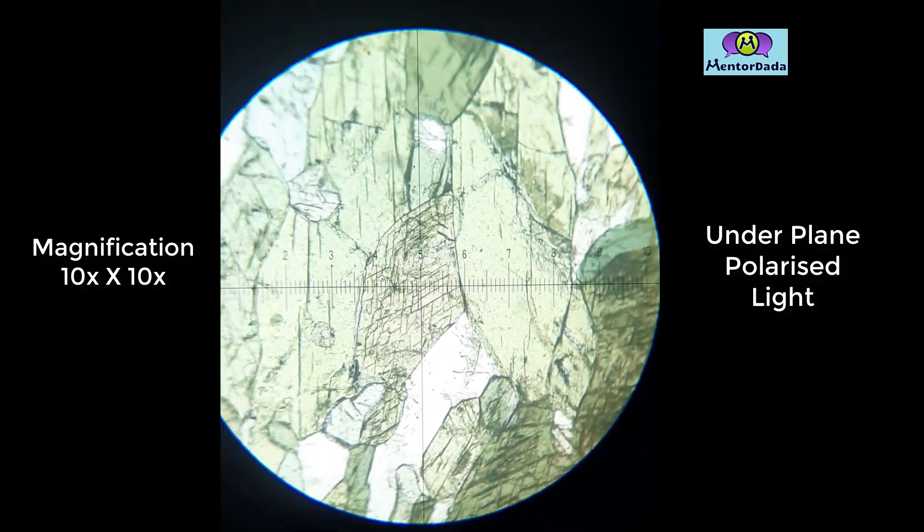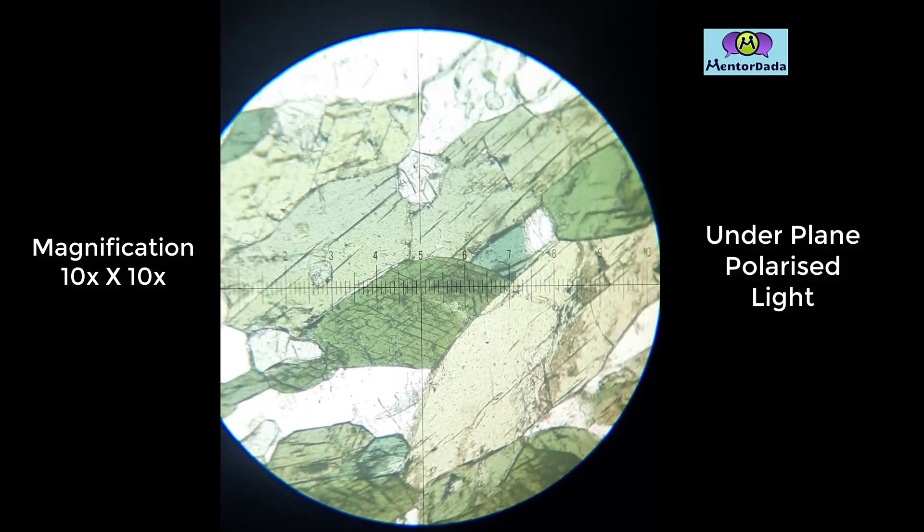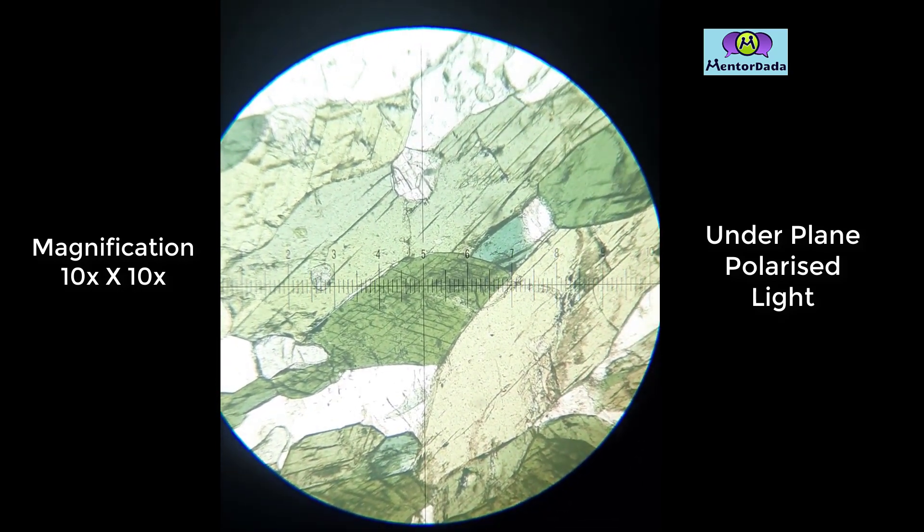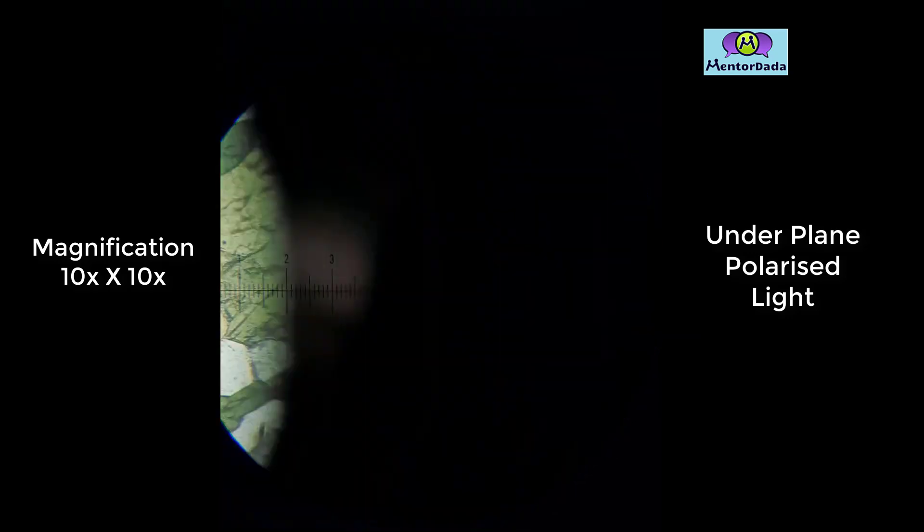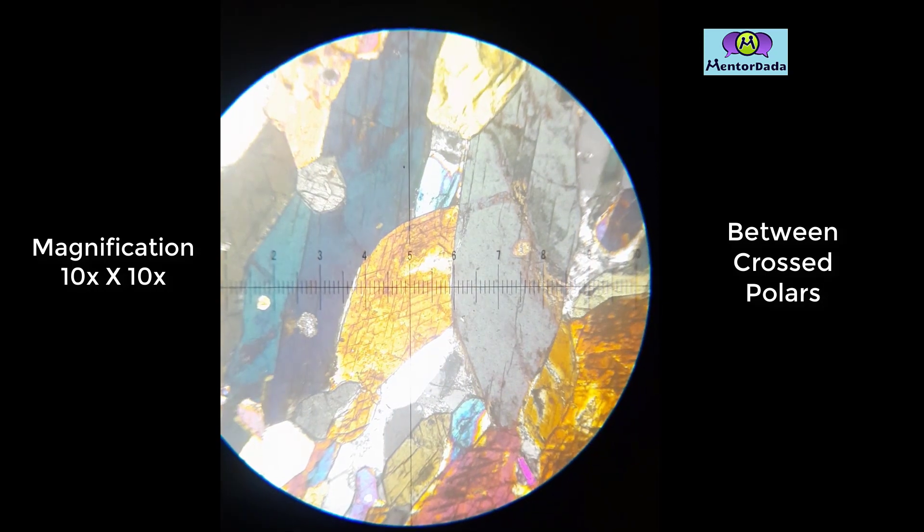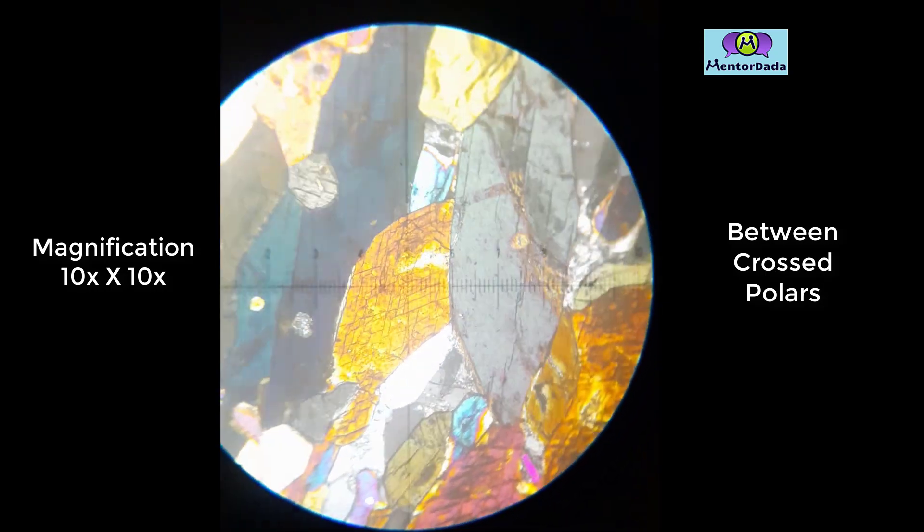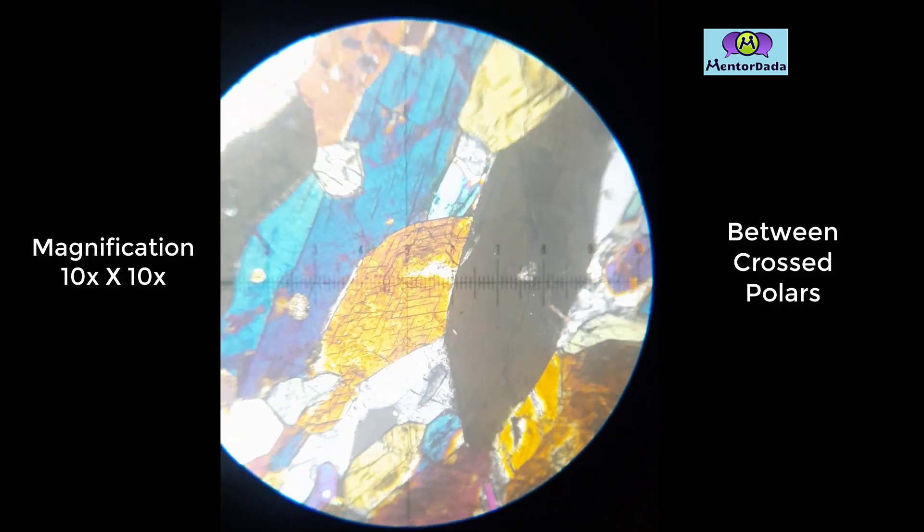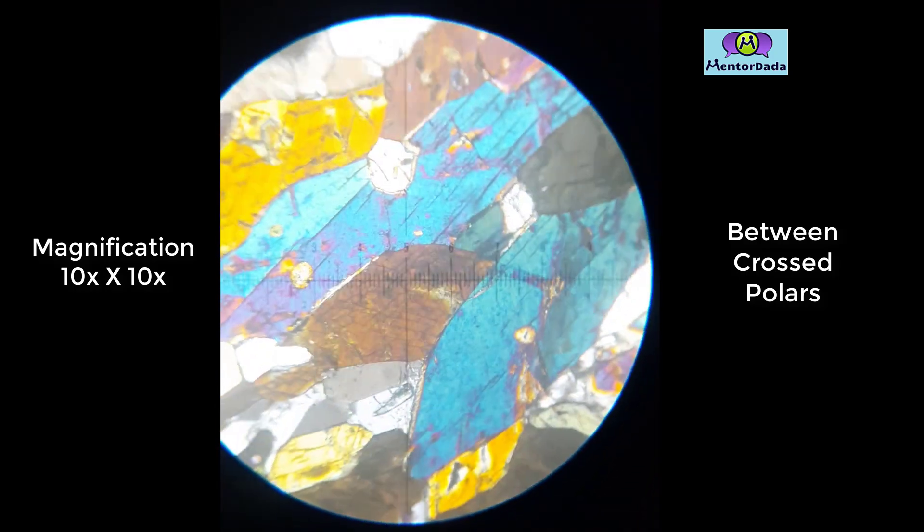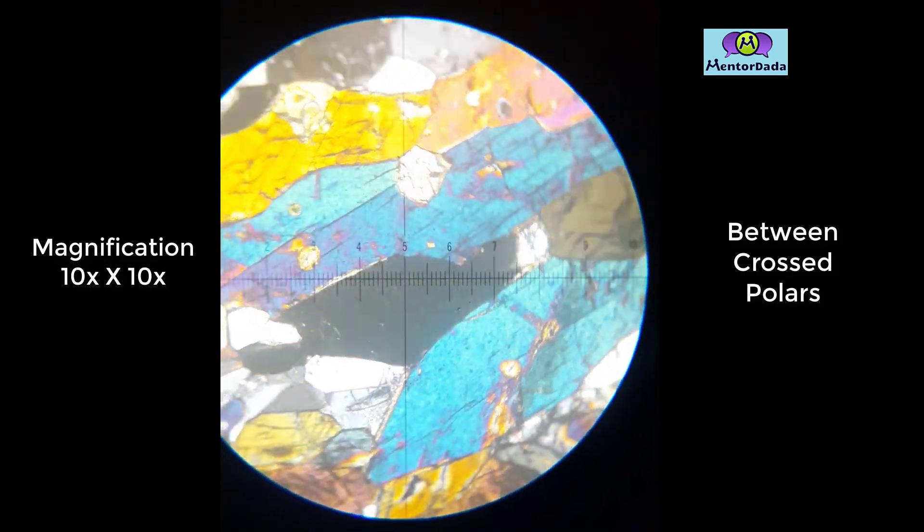The grains are euhedral in shape. Between cross polars, the mineral is changing its color from second order yellow, so the mineral is anisotropic.